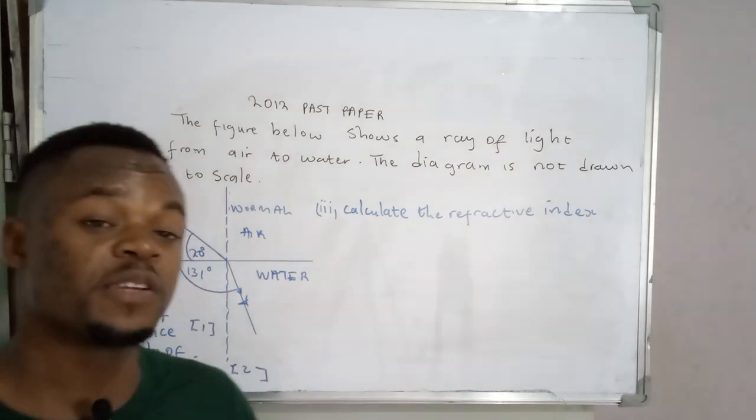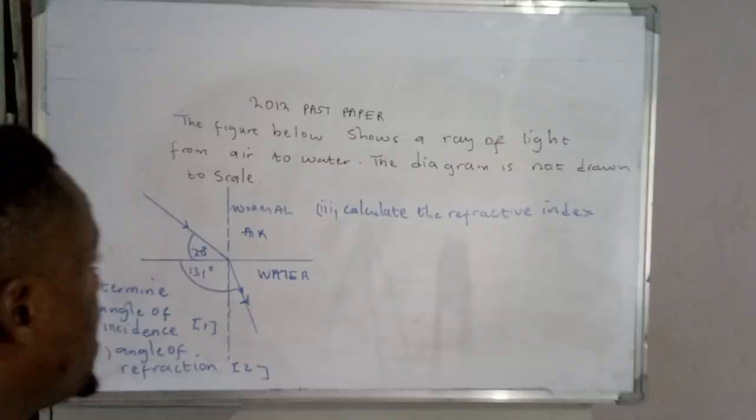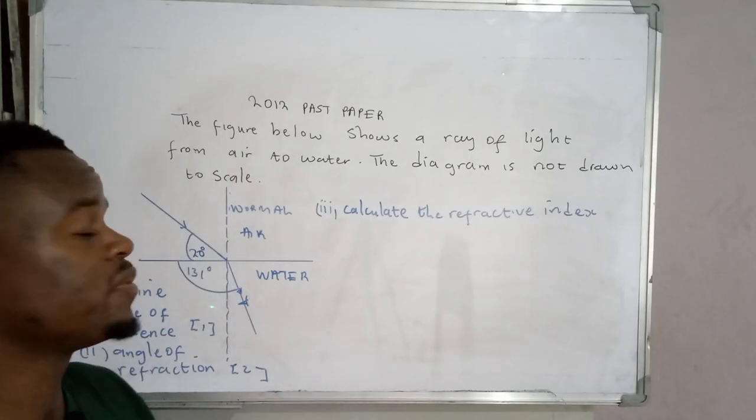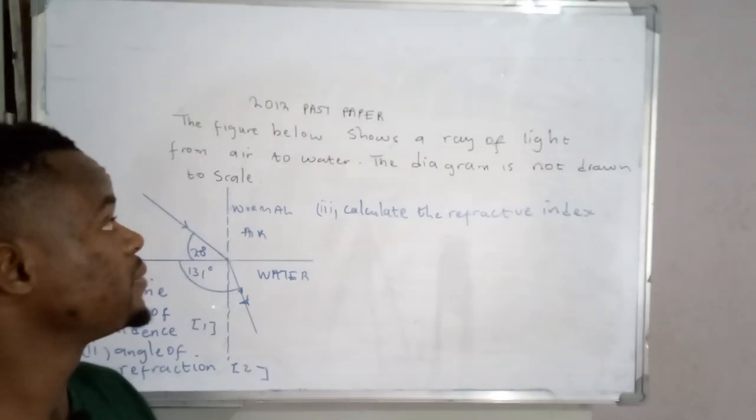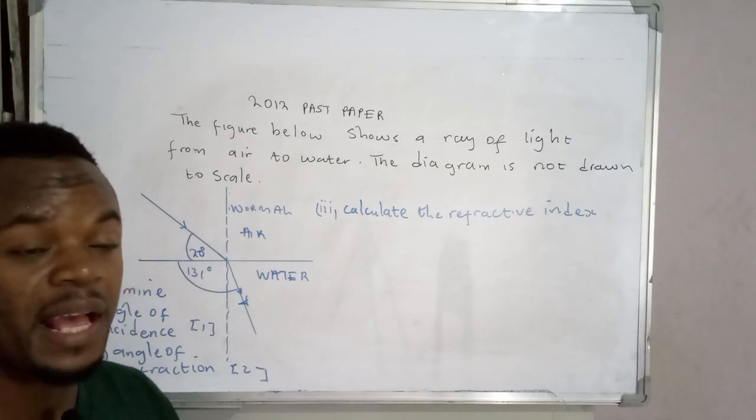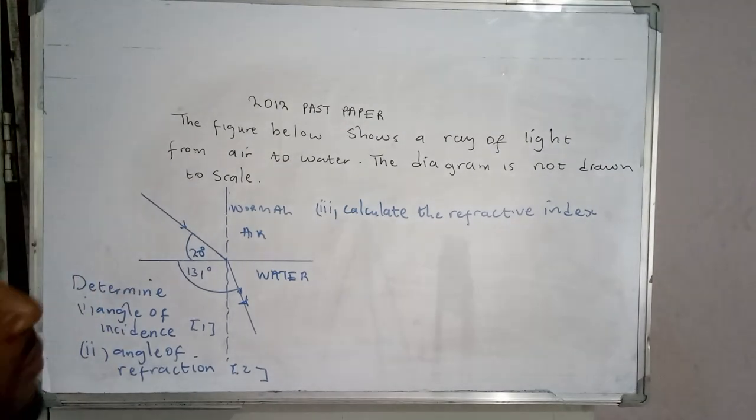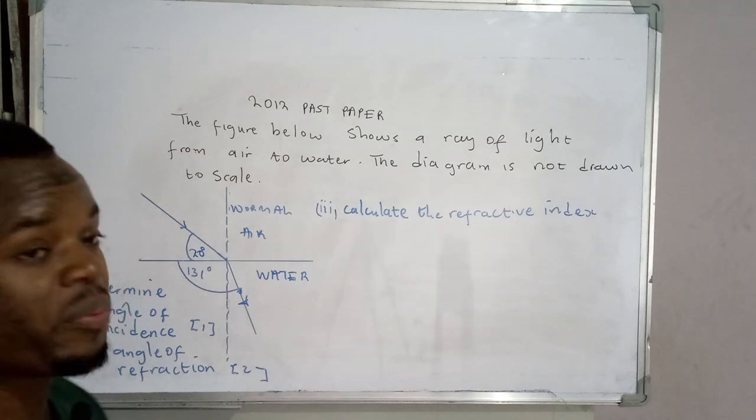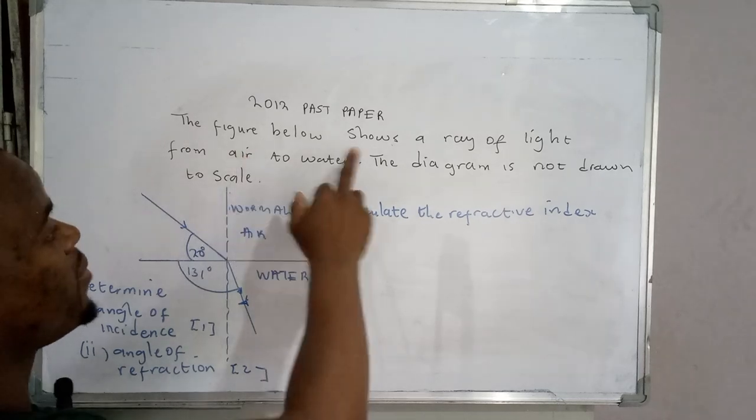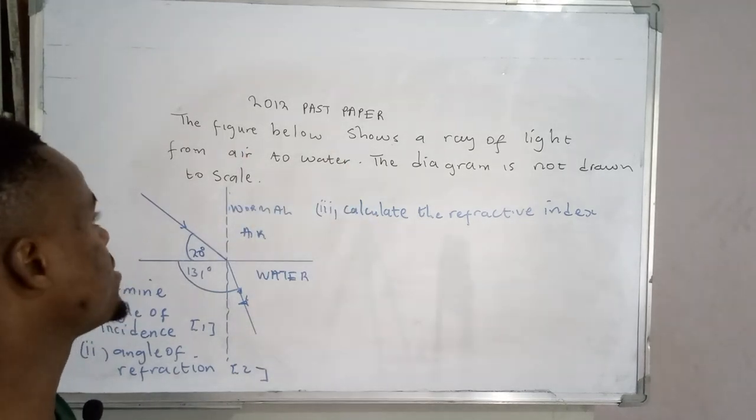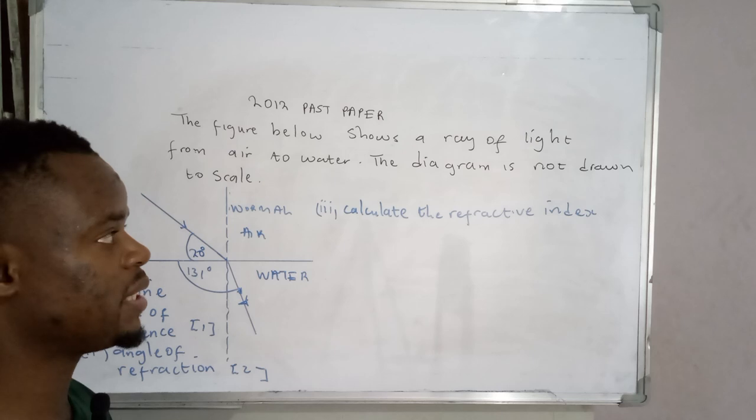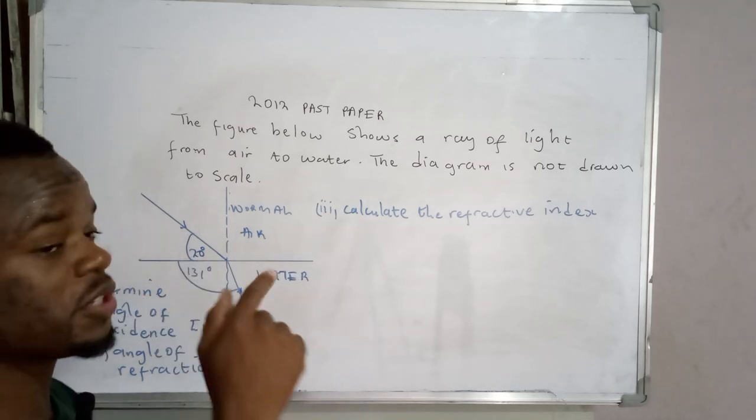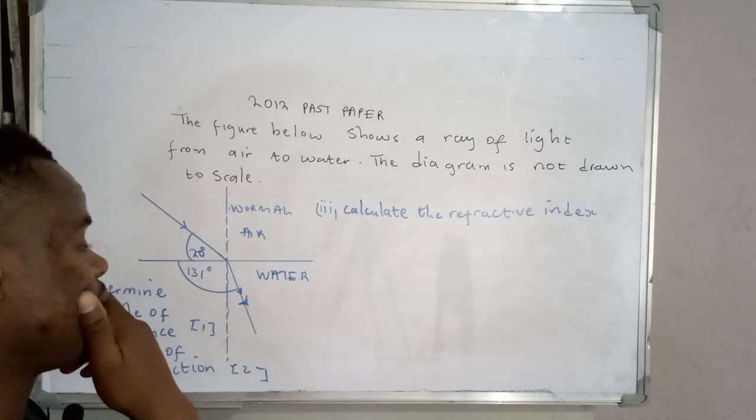Okay, so without any further ado, let's get into this. We have a problem which was extracted from a past paper, specifically the 2012 science paper. The problem reads: the figure below shows a ray of light from air to water. The diagram is not drawn to scale.